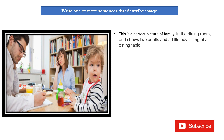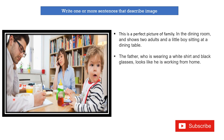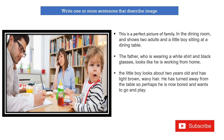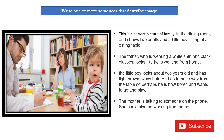You can also write: 'The father, who is wearing a white shirt and black glasses, looks like he is working from home.' Third sentence: 'The little boy looks about two years old and has light brown baby hair; he has turned away from the table — perhaps he is now bored and wants to go and play outside.'